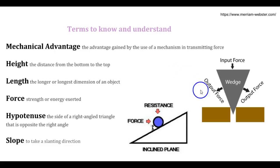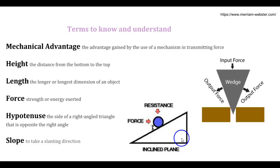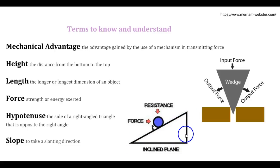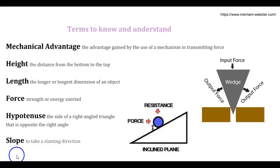So this would be your right angle on your triangle, and this would be opposite of your right side. And then slope: to take a slanting direction.